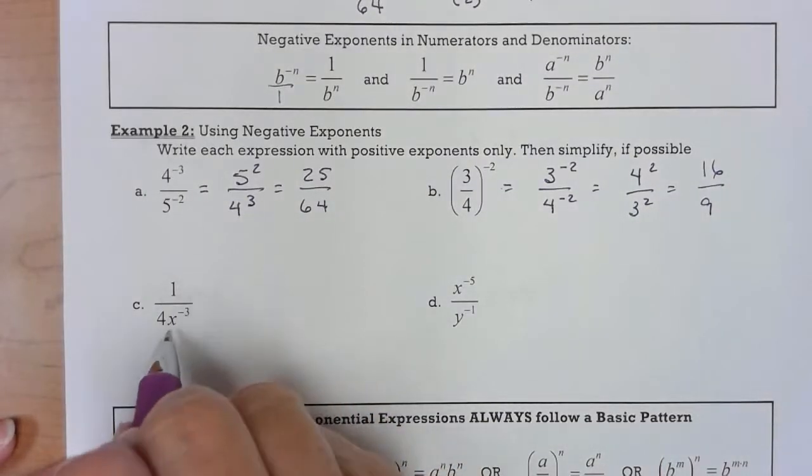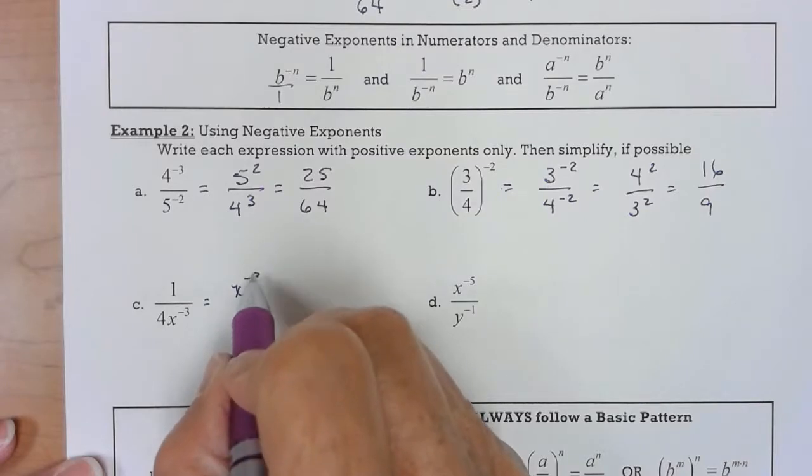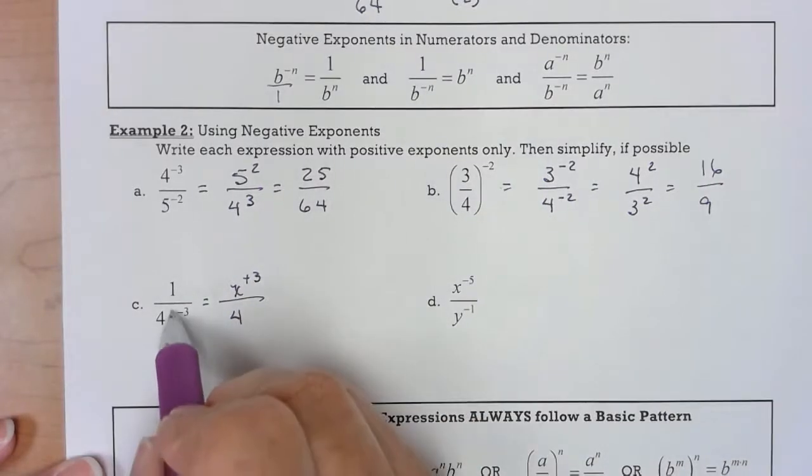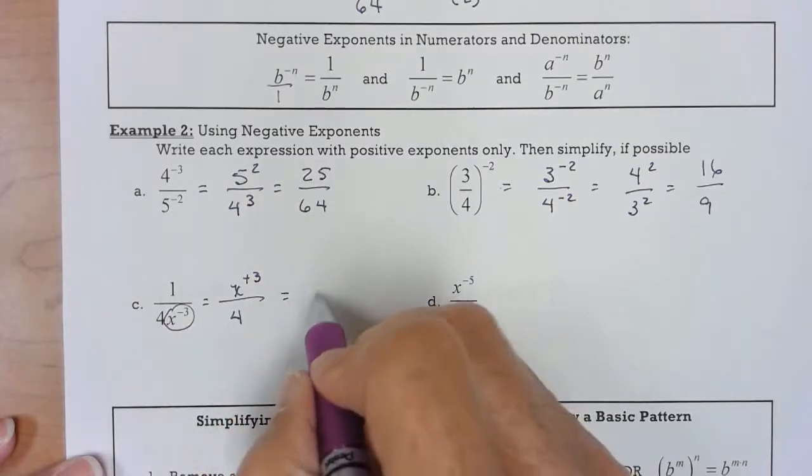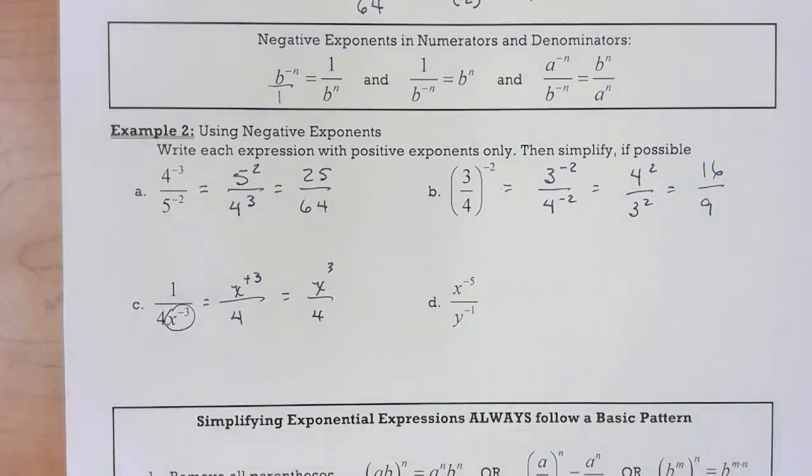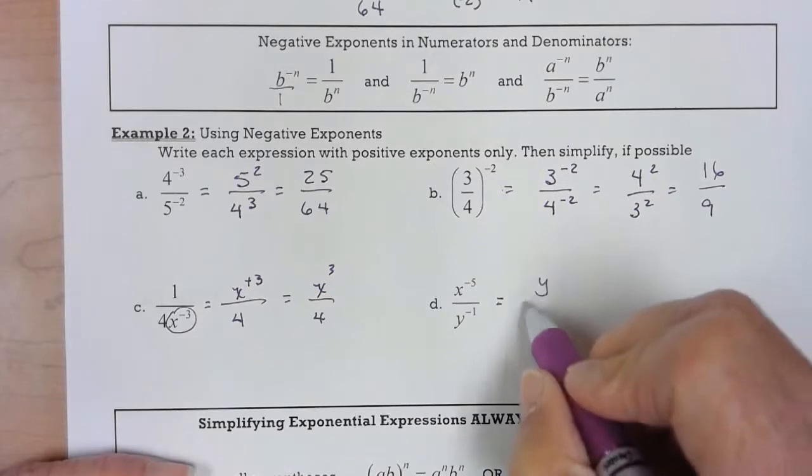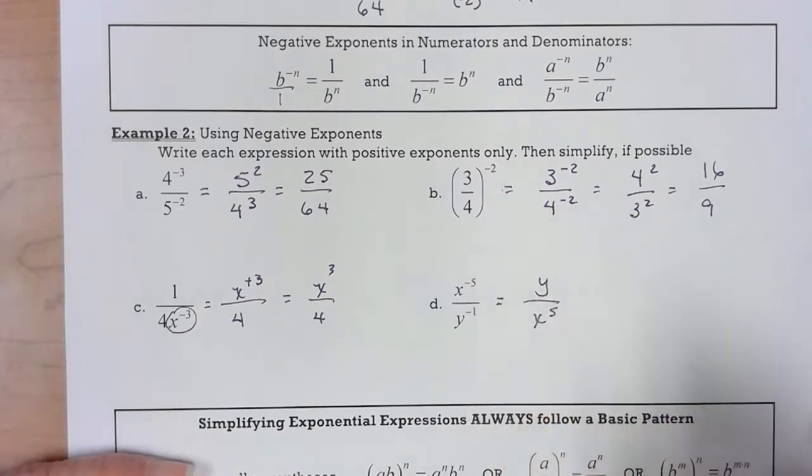This one, only the x is attached to the negative 3, so only the x to the negative 3 goes up. So actually that was my answer but it looks sort of nasty. Here we are. In this one I just flip them. There we are.